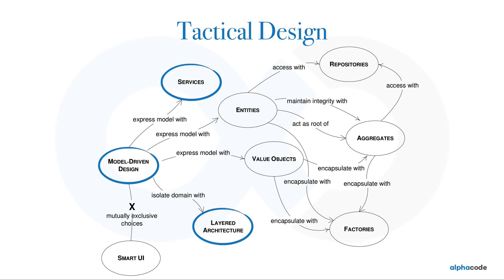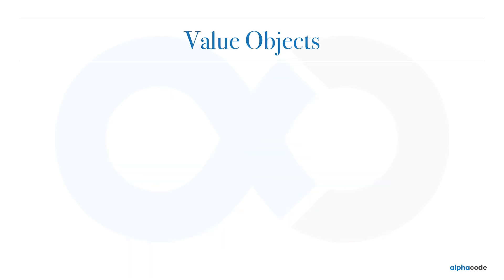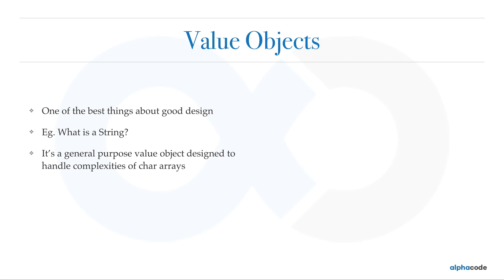Now let's look at value objects, which are one of the best things about good design — domain-driven design emphasizes value objects more than you might be used to. What is a string? It's a general-purpose value object designed to handle complexities of character arrays. When coding in C, you had character arrays, but string wraps up a character array and gives you so many business functionalities like renaming, replacing, index-of, substring, deleting, and iterating. You're so used to it you can't imagine life without it. Value objects reduce complexity and force ubiquitous language.